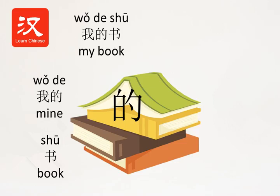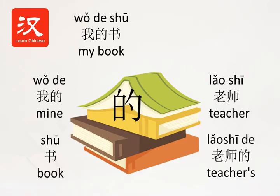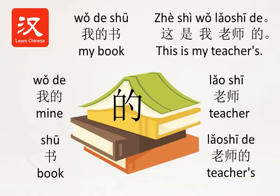Do you still remember the Chinese word for teacher? I certainly do — it's 老师. So how would you say 'a teacher's'? 老师的. Great. 老师的 means teacher's. Then how about 'this is my teacher's'? Let me give that a try: 这是我老师的. 这 means 'this', 是 means 'is', and 老师的 means teacher's.